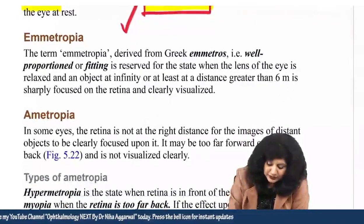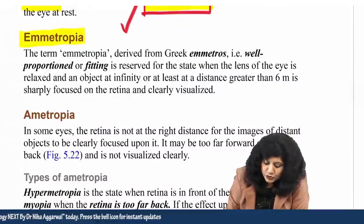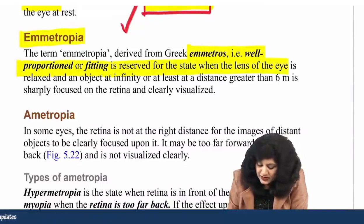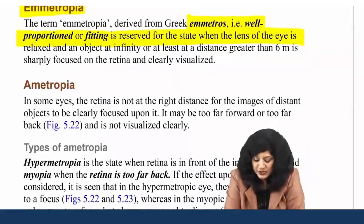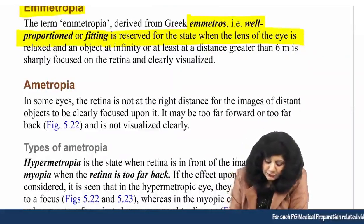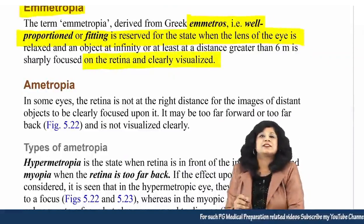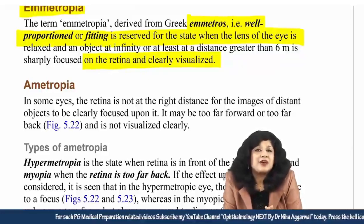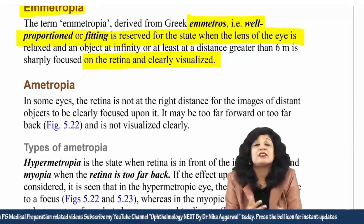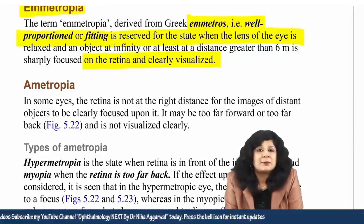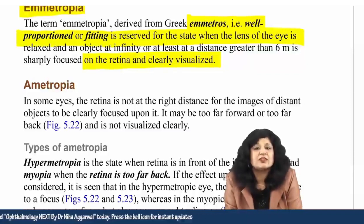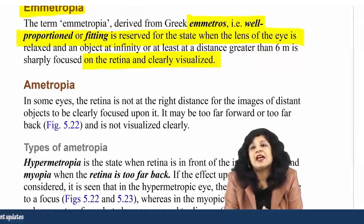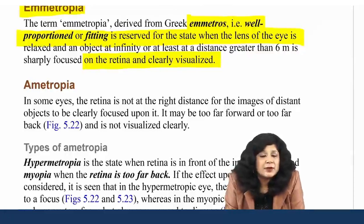Emetropia — from 'emetros' meaning well-proportioned — is reserved for the state when the lens of the eye is relaxed and the object at infinity, or at least 6 metres, is sharply focused on the retina and clearly visualized. The parallel rays of light coming from infinity, with accommodation at rest, are focused exactly on the retina.